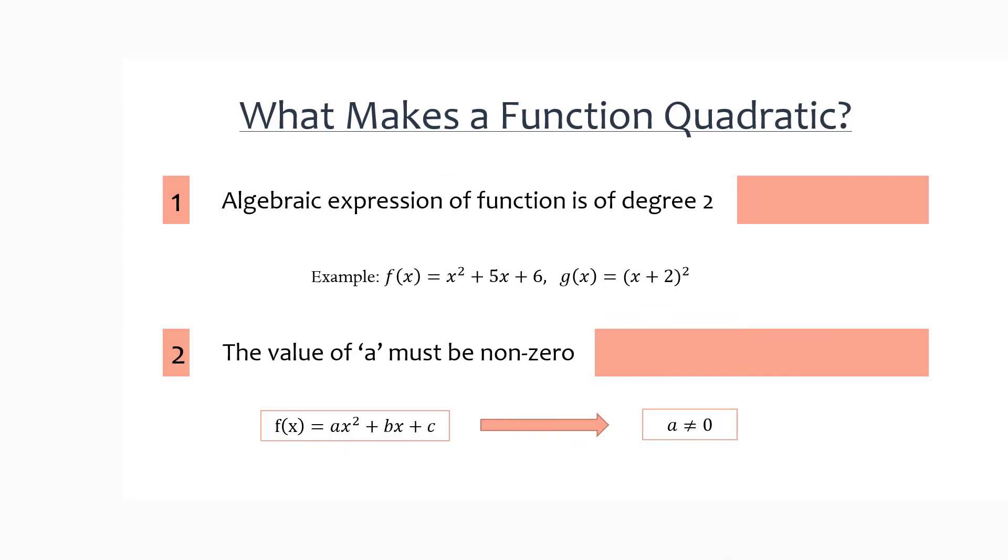So what actually makes a quadratic function a quadratic function is firstly, it is a polynomial of degree 2. So that x squared term, and you can see in the g of x, the x actually gets squared if you expand it out. Those x squared terms are what make a quadratic a quadratic. Also, the value of a must be non-zero because that just changes the degree of the function.